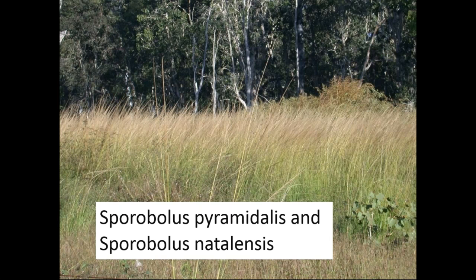Giant Rat's Tail Grass consists of two species: Sporobolus pyramidalis and Sporobolus natalensis. In reality they're probably not all that different to manage. They look very similar out in the field, and if you can see through the middle of that screen, that's some Giant Rat's Tail Grass growing in front of a woodland in North Queensland.